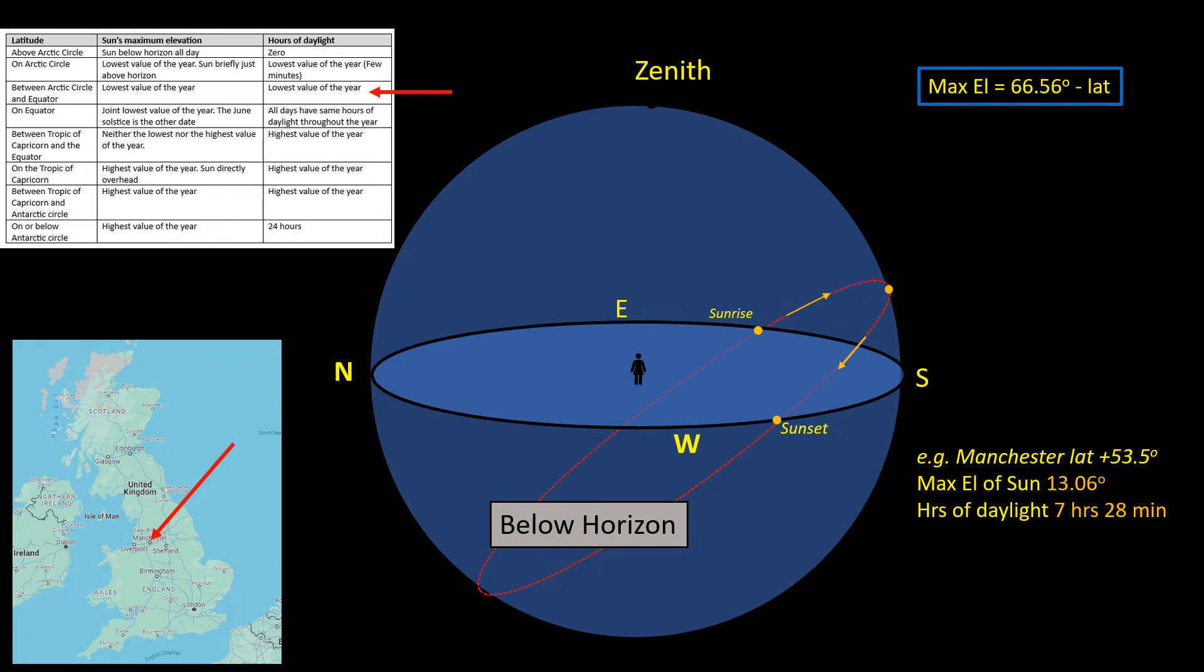So if you put these numbers in for a location between the Arctic Circle and the equator, we find that on the date of the December solstice, the sun achieves its lowest maximum elevation and the least hours of daylight. For example, Manchester, England: 13.06 degrees and seven hours, 28 minutes.